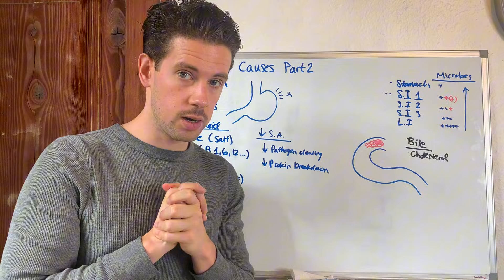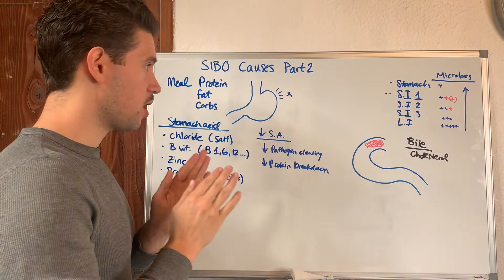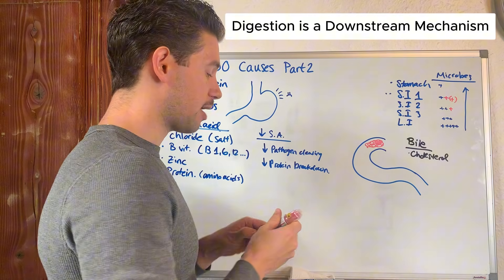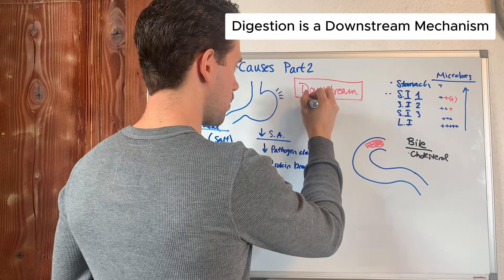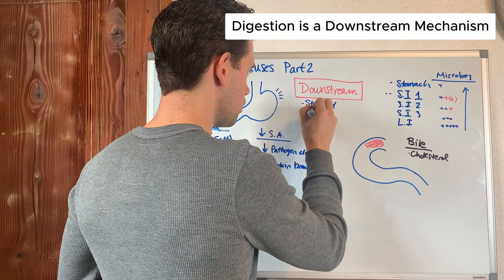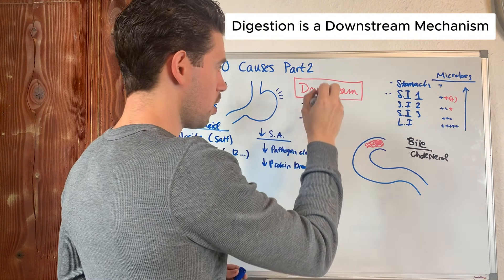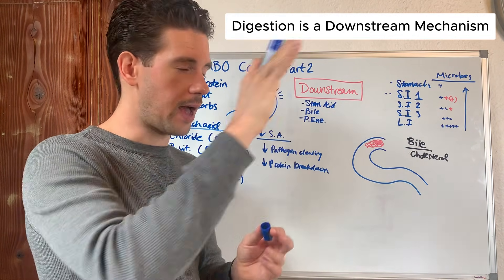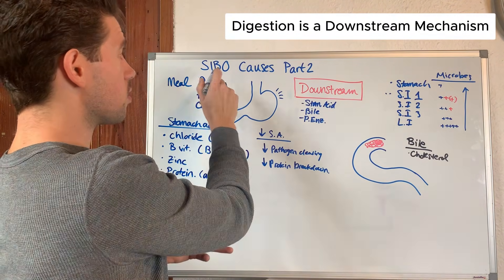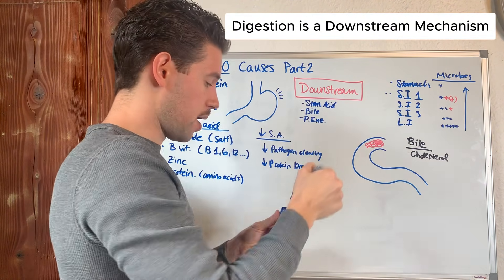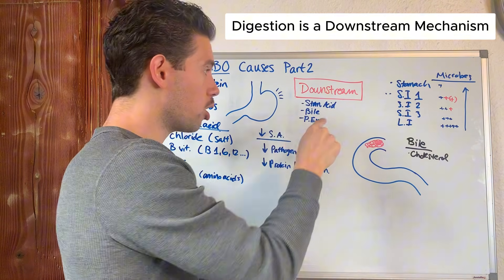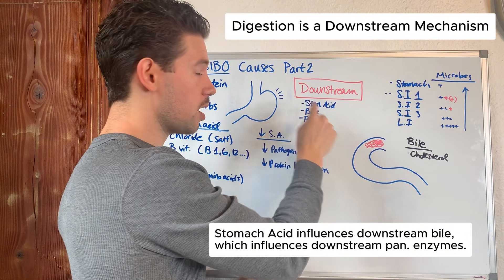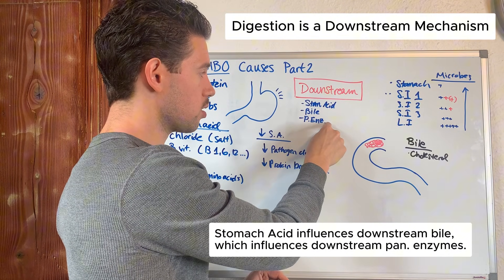What I do want to touch on that is incredibly important is that this is a downstream concept. Digestion is downstream. Stomach acid, then you have bile, then you have pancreatic enzymes. Your levels of stomach acid influence your body's ability and signals to release enough bile and to release enough pancreatic enzymes.